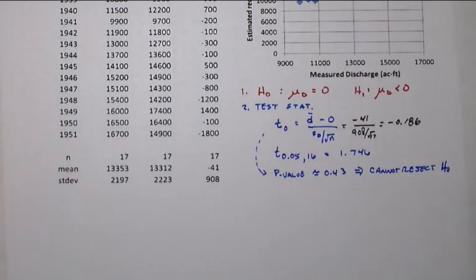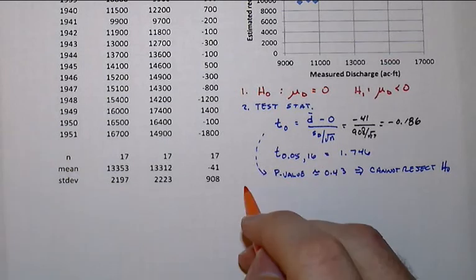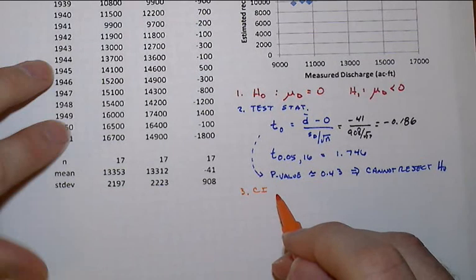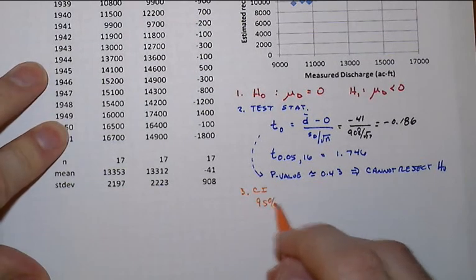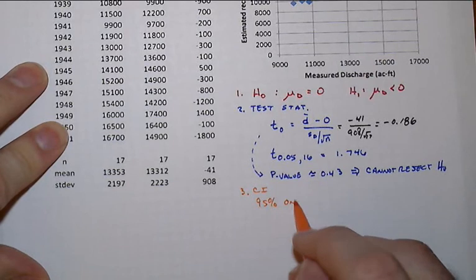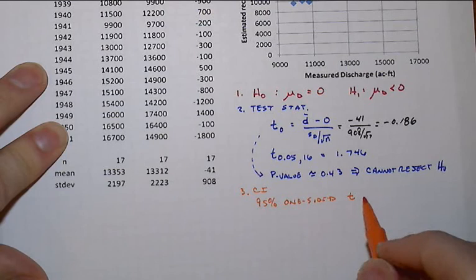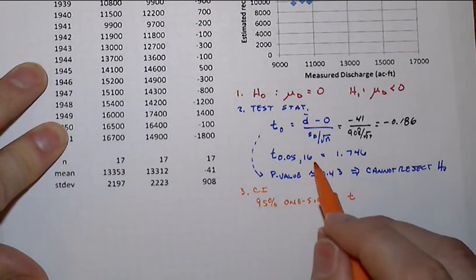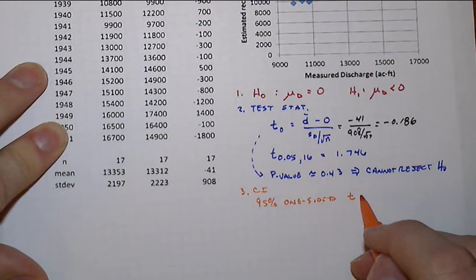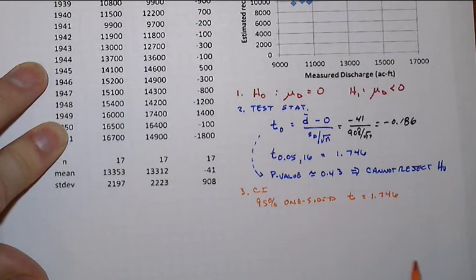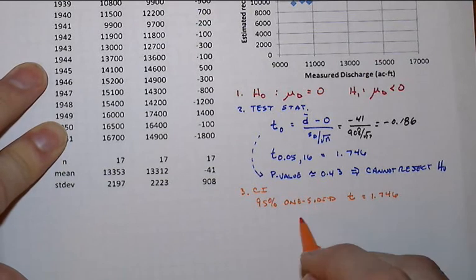And then if we wanted to go look at a confidence interval, we're going to process that in the same kind of manner. The 95% one-sided t-value of interest for 16 degrees of freedom. This is going to be a different value than what we had up here. Sorry, what am I saying? Sorry, I got to hit myself there. This was one-sided up here. This is also one-sided as well. So it's the same, of course, 1.746. I was thinking about the two-sided confidence interval. Sorry about that.